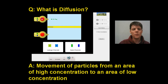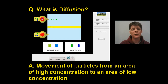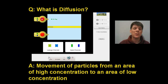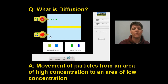Diffusion is when we have the movement of particles from an area of high concentration to an area of low concentration. So let's look at a video that's going to help us better understand how this happens and what it looks like at the molecular particle level.